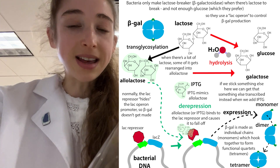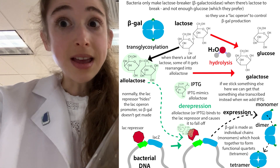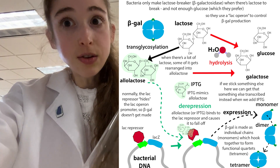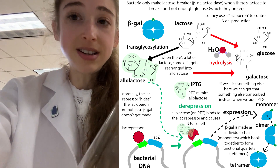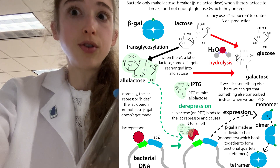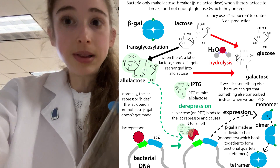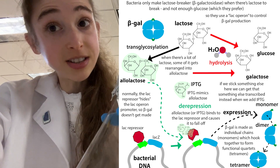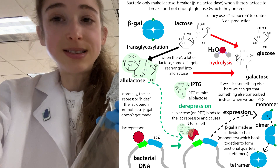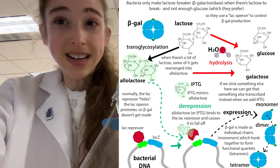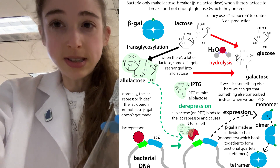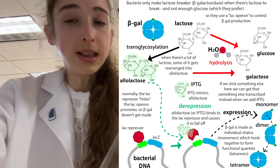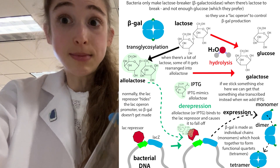First, the bacteria have to make the messenger RNA for making those proteins. The promoter in front of the gene is controlling RNA polymerase going and making a messenger RNA copy of that DNA. And then that gets translated by the ribosomes into making a protein. So in order to make the protein, you first need to make the mRNA.